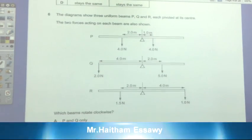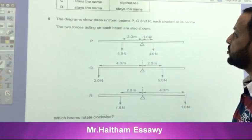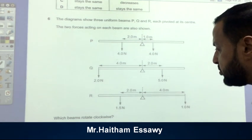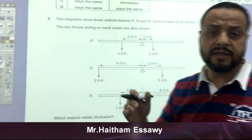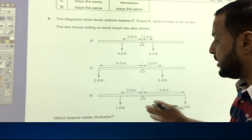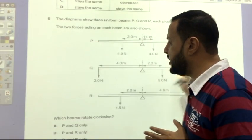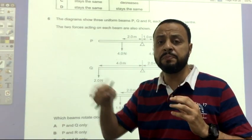After that, the diagrams show three uniform beams, P, Q and R, each pivoted at its center. The two forces acting on each beam are also shown, as you see. Which beams rotate clockwise? You know that we have two types of directions: we have clockwise and we have anti-clockwise. To answer this question, we have to calculate the moment of force in each case. And you know that the moment of force equals force times distance from pivot.